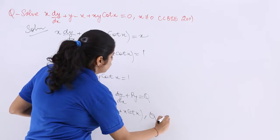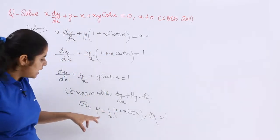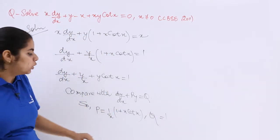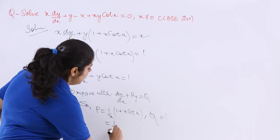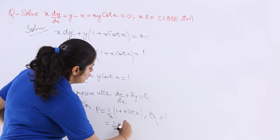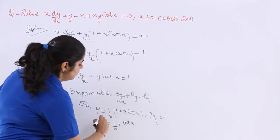What is q? q should be 1. And if you open up, again p would be what? It would be 1/x + cot x. That is your p. That is done.